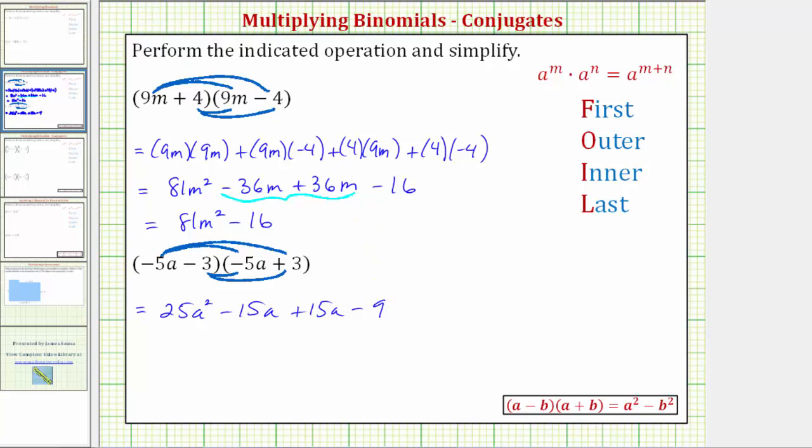And again, combining like terms, here we have negative 15a plus 15a, which is zero. And therefore, this simplifies to 25a squared minus 9.